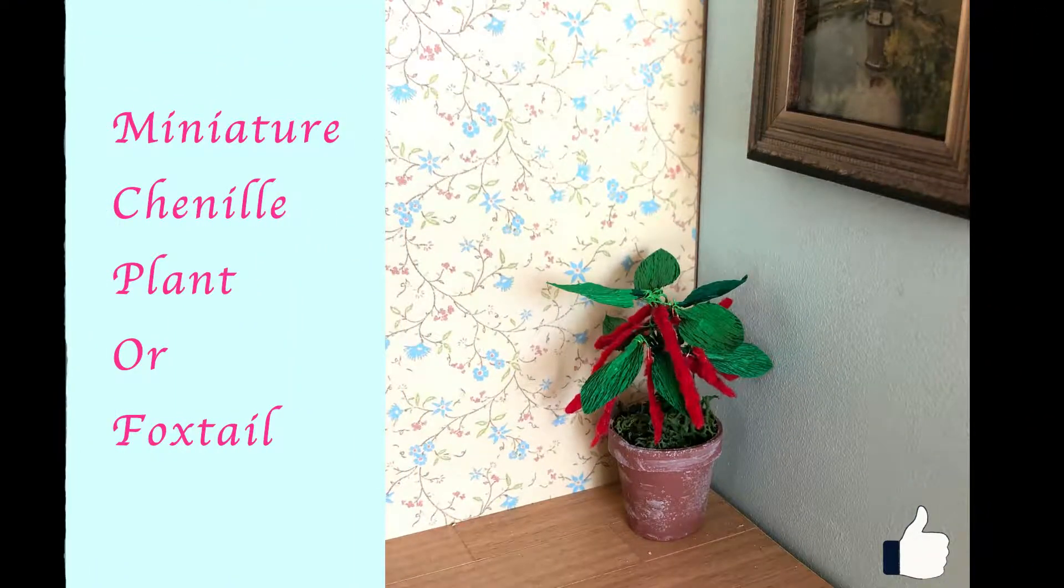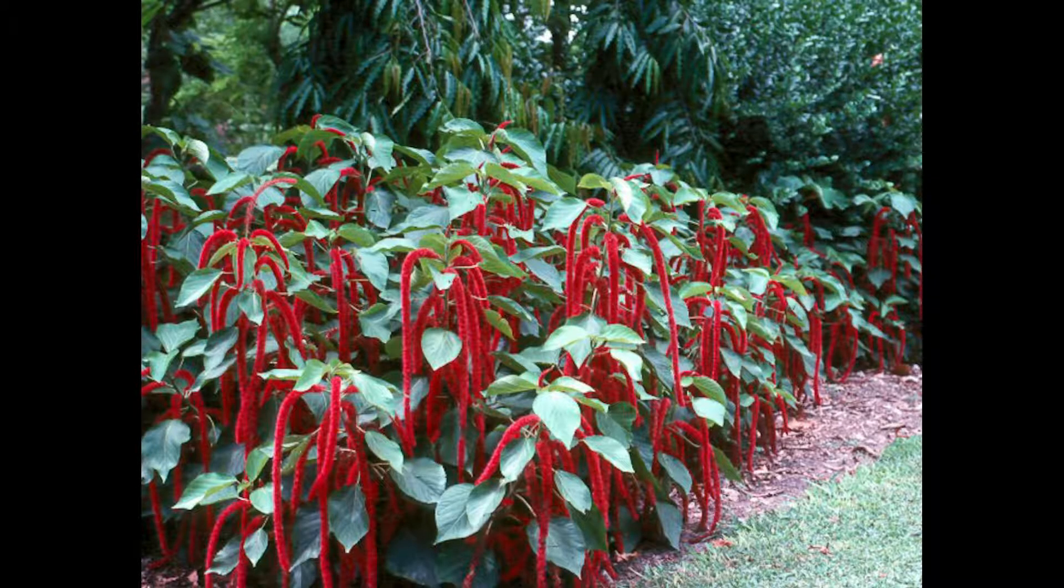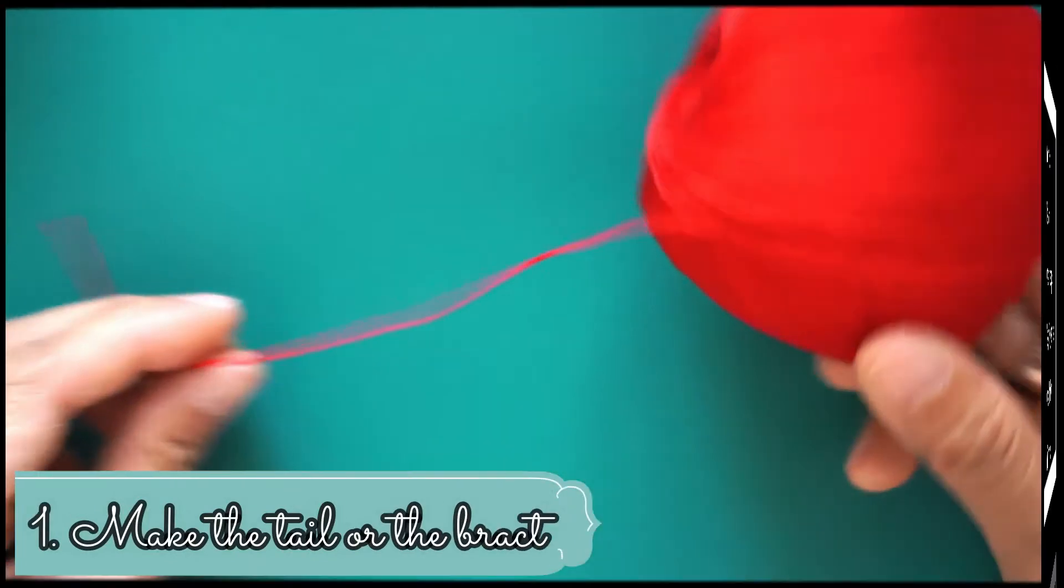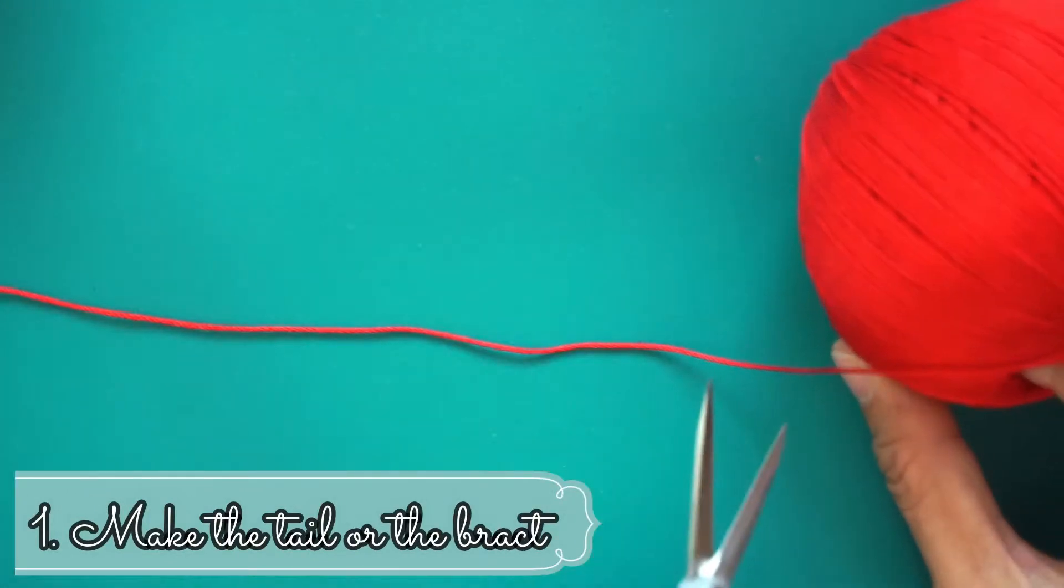Hello, today I am going to show you how to make a chenille plant, or also called a fox tail, which is a common house plant in tropical Asia. Here are the materials I used: crochet yarn to make the tail or the broccoli.